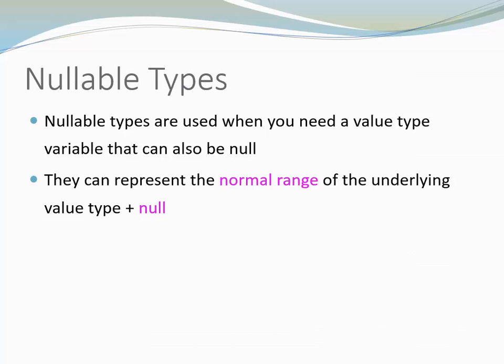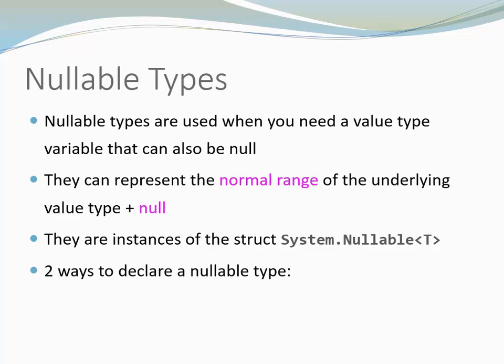They can represent the normal range of the underlying value type plus the additional value null. Nullable types are instances of the struct System.Nullable<T>. There are two ways to declare a nullable type.